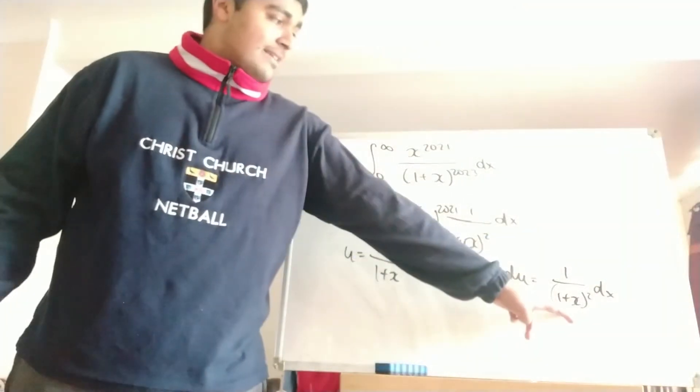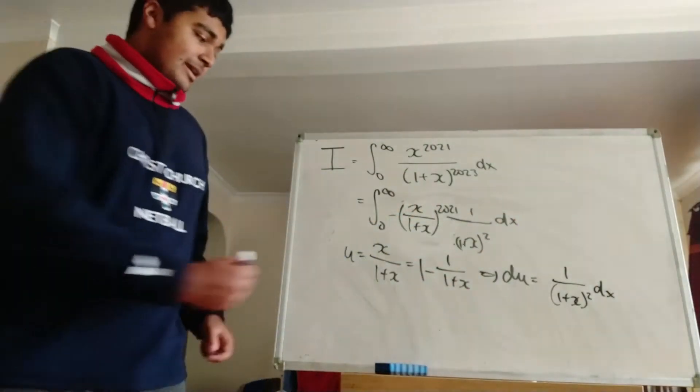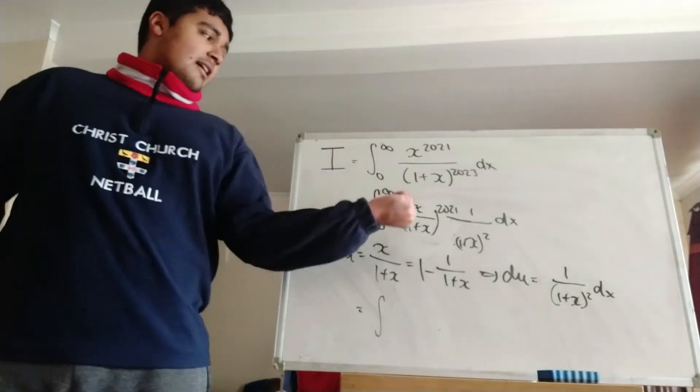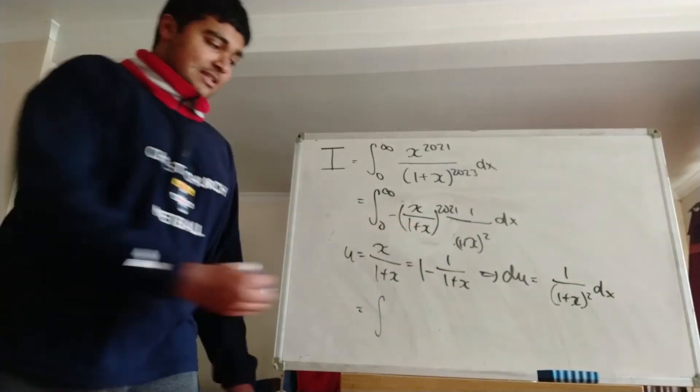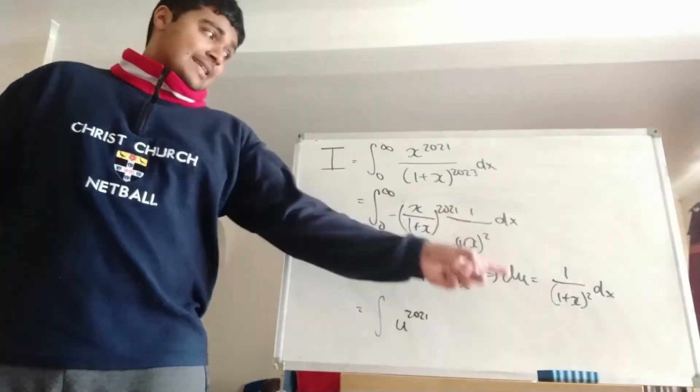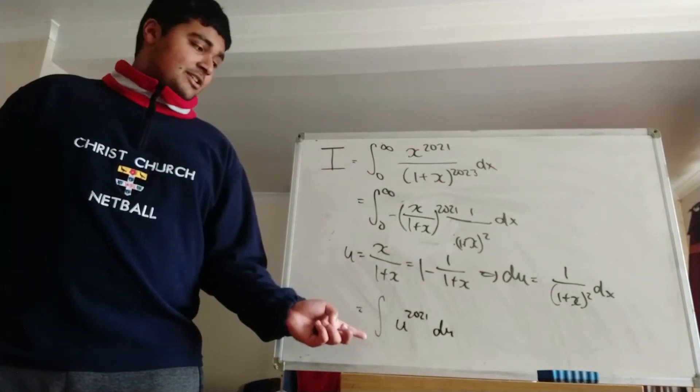So this thing here is exactly what we have here, 1 over 1 plus x squared dx. So this integral here is now the integral, and I'll leave the limits just for now. But x over 1 plus x to the 2021, that's just going to be u to the 2021. And then 1 over 1 plus x squared dx is just du. So we've got something very nice, but now we just need to worry about the limits of integration.